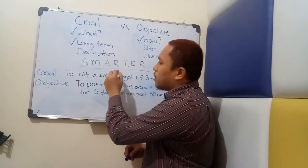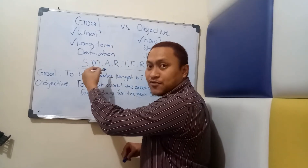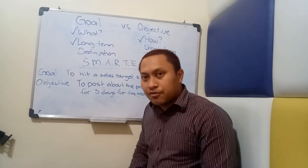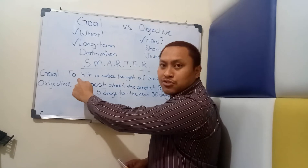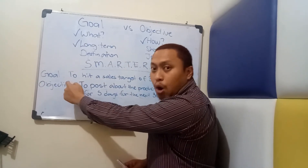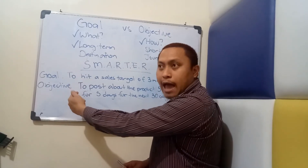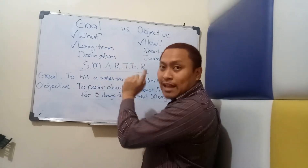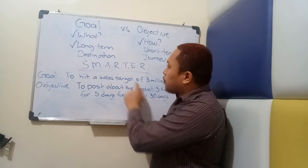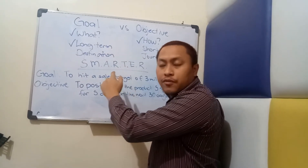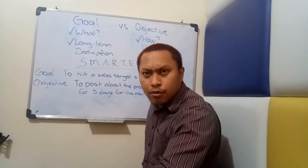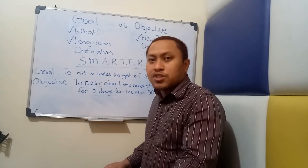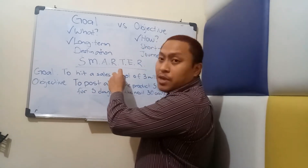The R part stands for Relevant — not Realistic, because that's redundant with A. You have to ask yourself: is my objective really related to the goal? Would this really be responsive to the goal? Is this a corresponding action for the goal to happen? If yes, then my objective is relevant. And just as mentioned earlier, 'the next 30 days' — there has to be a timeframe involved, because if it's not time-bound, then when would you be able to sit down and assess whether you were able to do it successfully or not? There really has to be a time element.